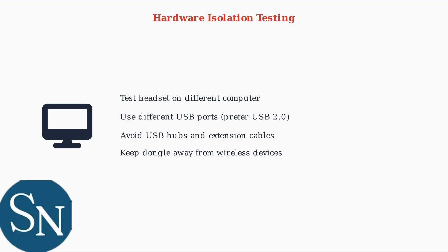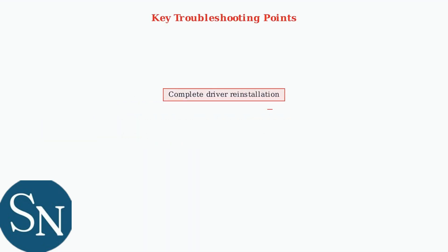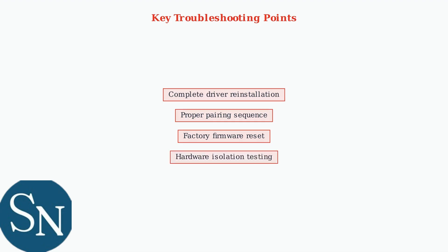Avoid USB hubs and keep the dongle away from other wireless devices to minimize interference. These advanced troubleshooting techniques address the most common HyperX Cloud2 wireless issues after updates. Follow these steps systematically for the best chance of resolving connectivity problems.